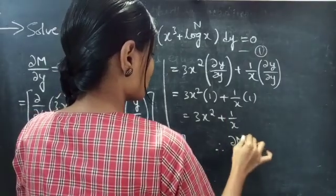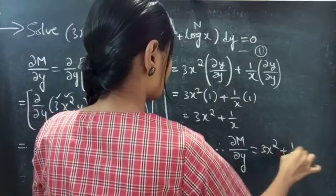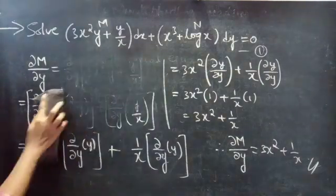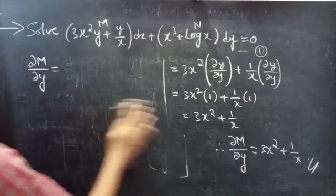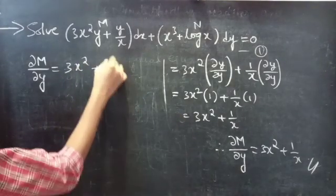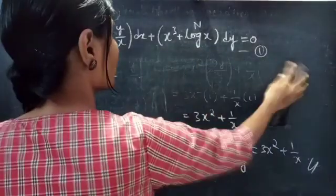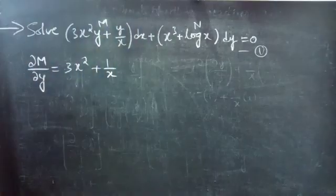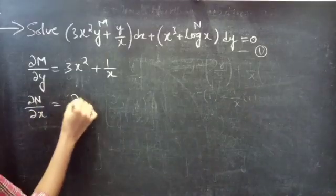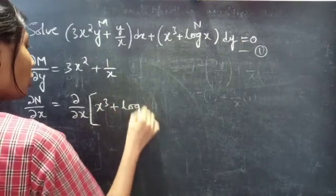Therefore, the partial derivative of M with respect to y is equal to 3x² + 1/x. Now, let's find the partial derivative of N with respect to x. ∂N/∂x equals ∂/∂x of (x³ + log x).